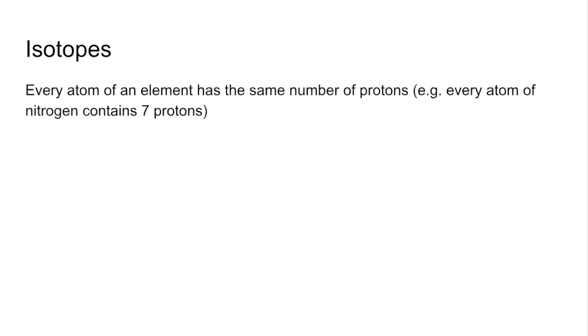So we're going to move on to isotopes now. We'll start with this, every atom of an element has the same number of protons. For example, every atom of nitrogen has got seven protons.